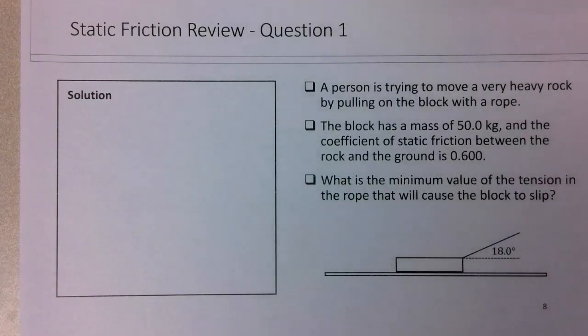But the block has a mass of 50 kg, so that's pretty heavy. And the coefficient of static friction between the rock and the ground is 0.6. And what is the minimum value of the tension in the rope that will cause the block to slip?